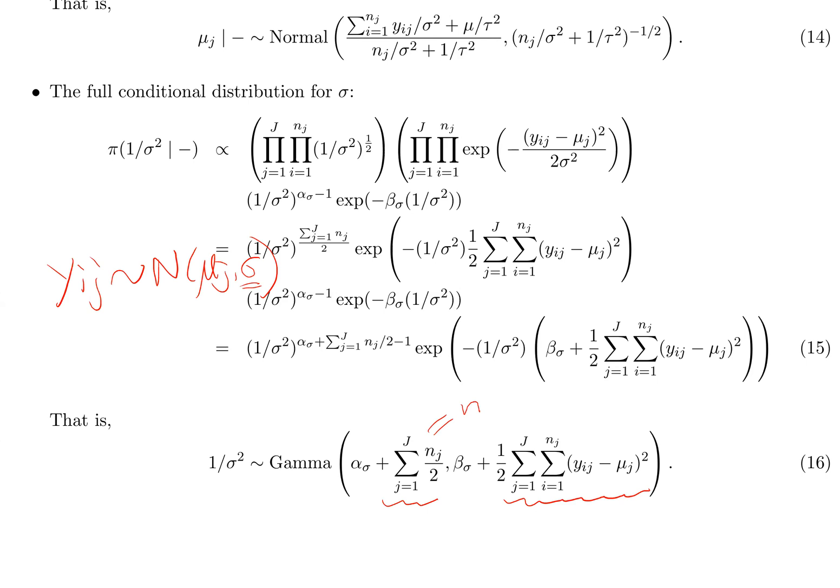This tells us about how the model is set up. Even though mu_j and sigma are shared across groups, they're shared differently. Sigma is the only parameter being used, whereas mu_j shares hierarchically through a two-stage prior.